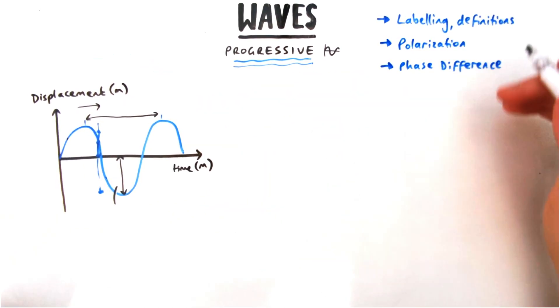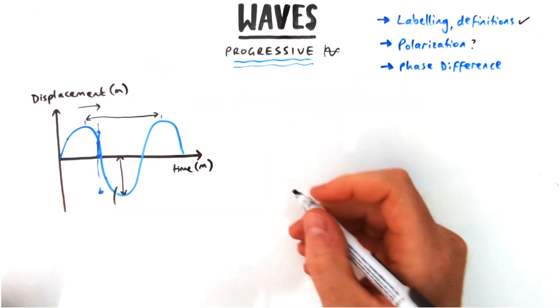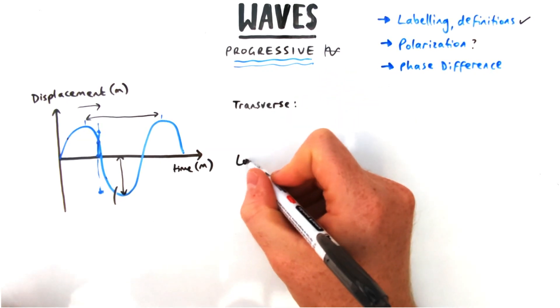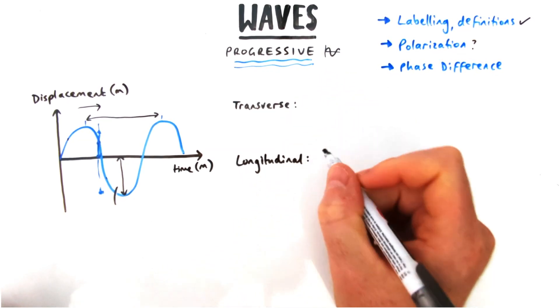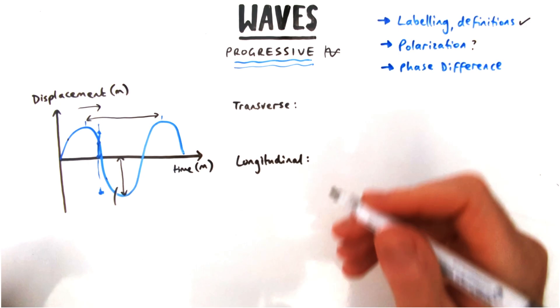Let's talk about something that happens with progressive waves which is called polarization. This polarization effect only happens with transverse waves. So we're going to talk about the difference between transverse and longitudinal first.